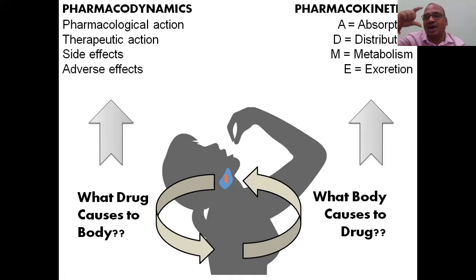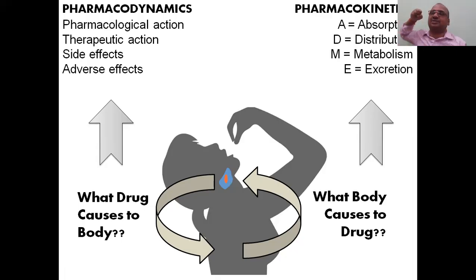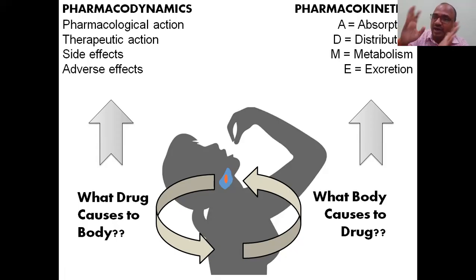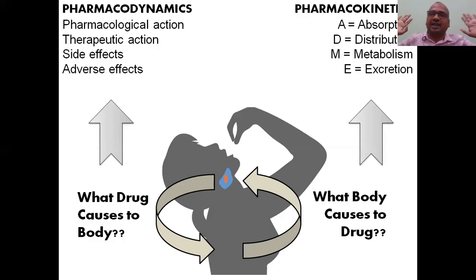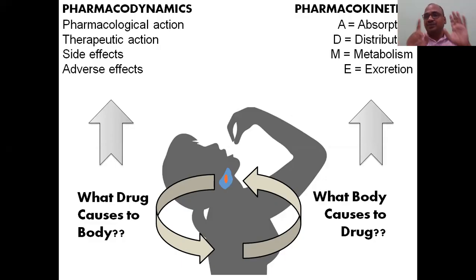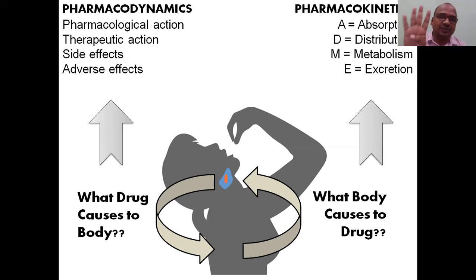What the body causes to the drug? It absorbs the medication, distributes it throughout the body, metabolizes it, and finally excretes it. There are four steps: A, D, M, E — Absorption, Distribution, Metabolism, and Excretion. All four come under pharmacokinetics.